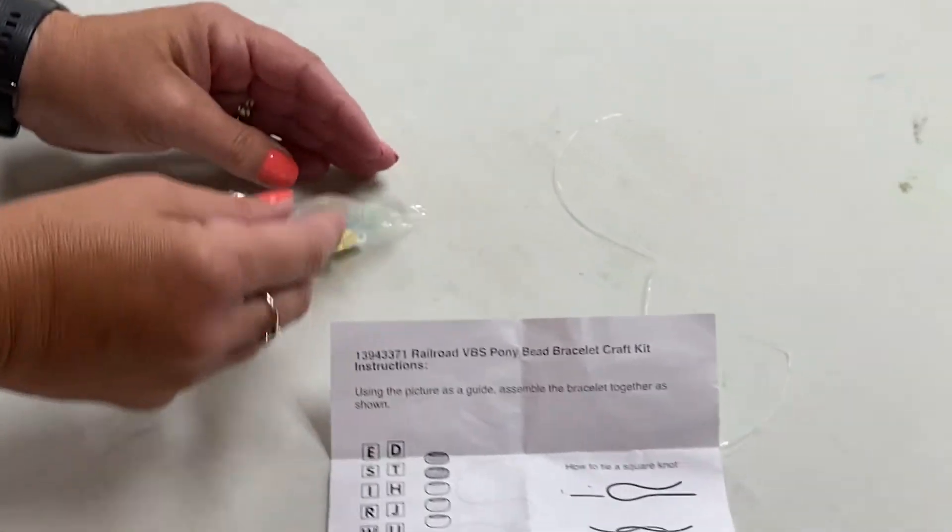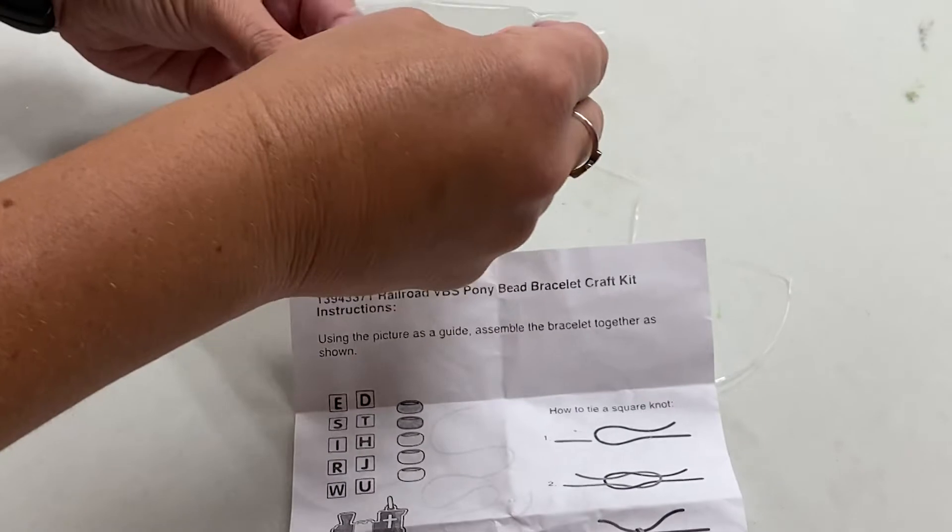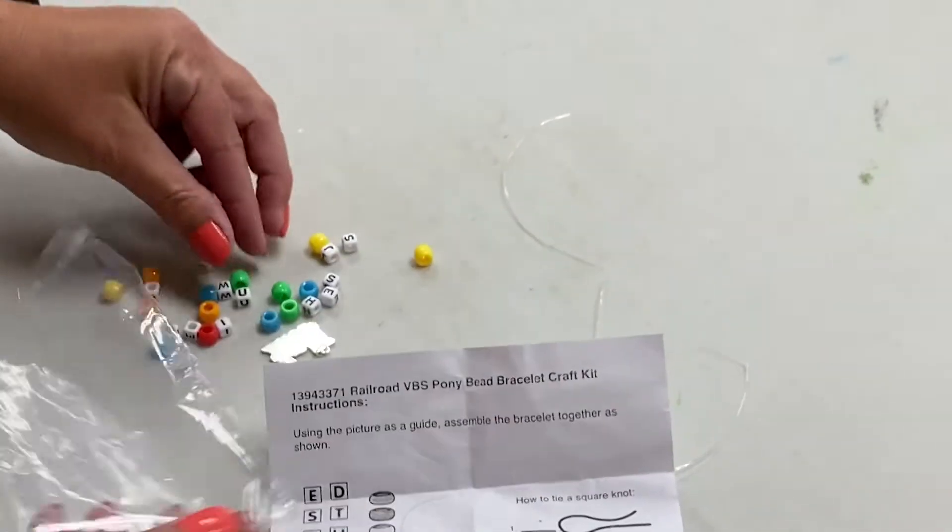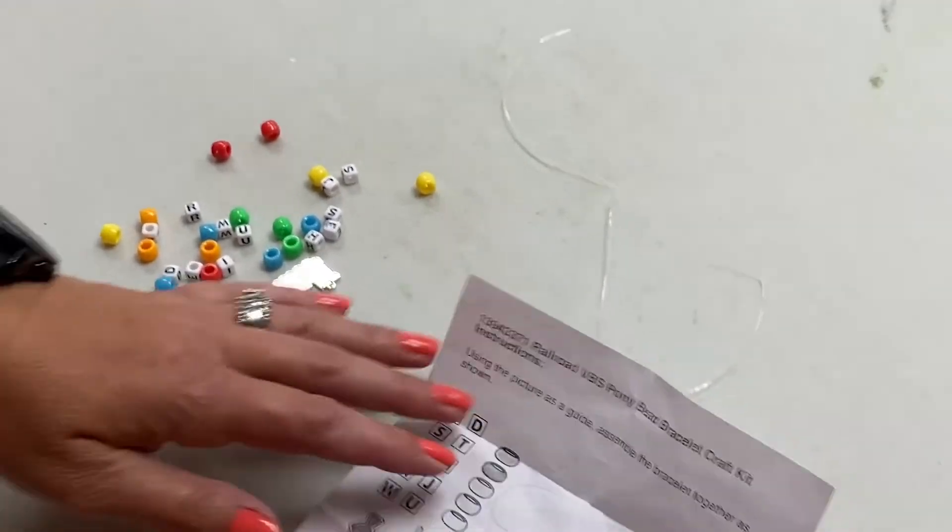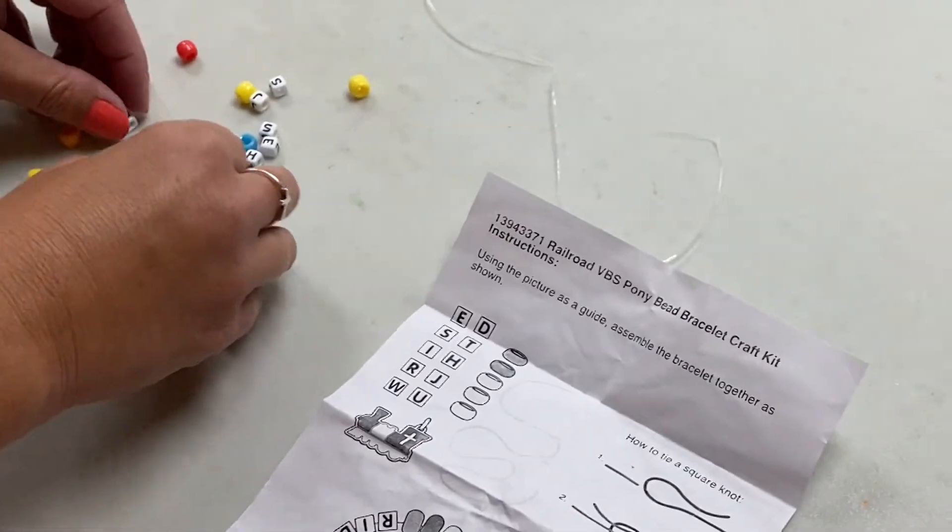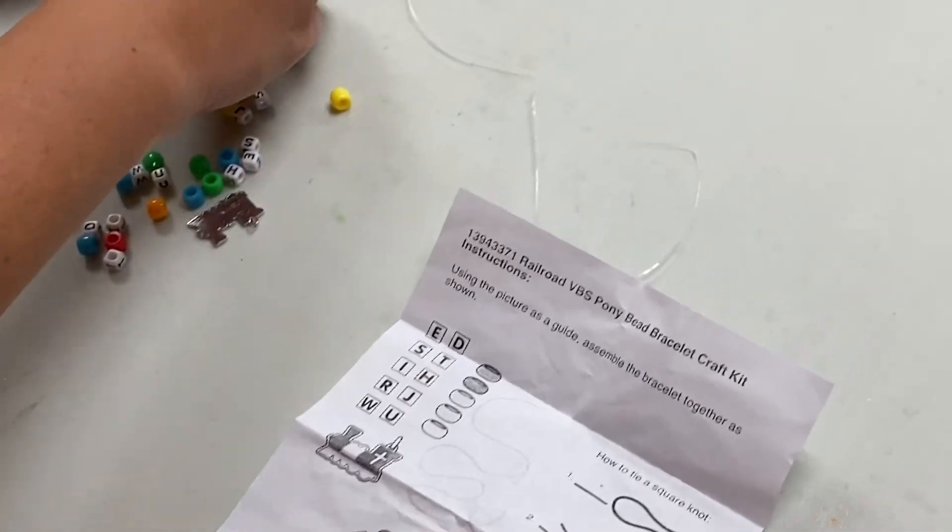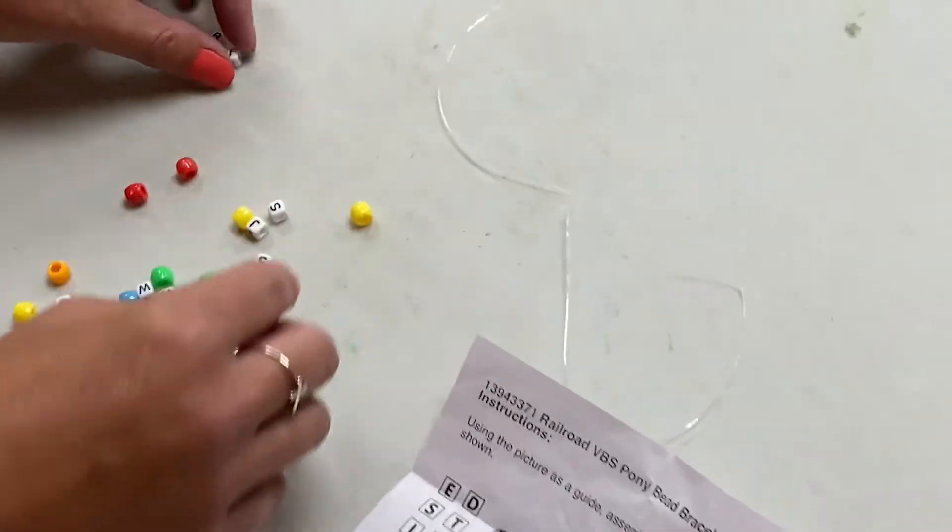Okay, so when you pour everything out, hopefully you have all the correct letters. What I'm going to do to make it easier is go ahead and spell what I need to write on the bracelet, so I make sure that I'm spelling it right.